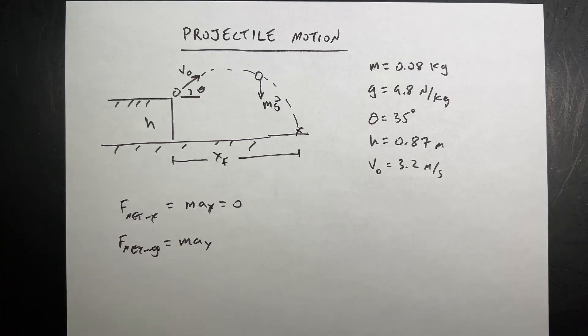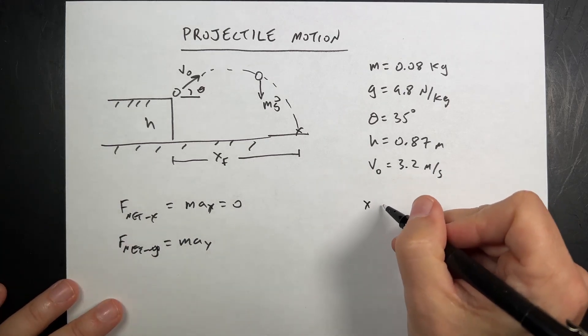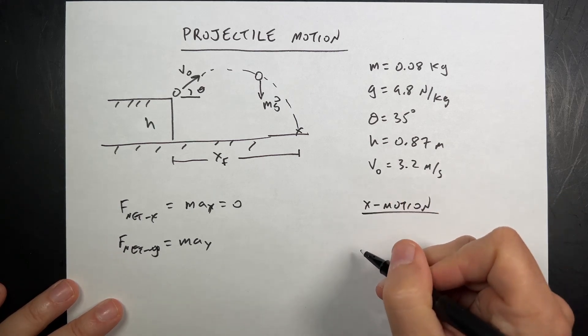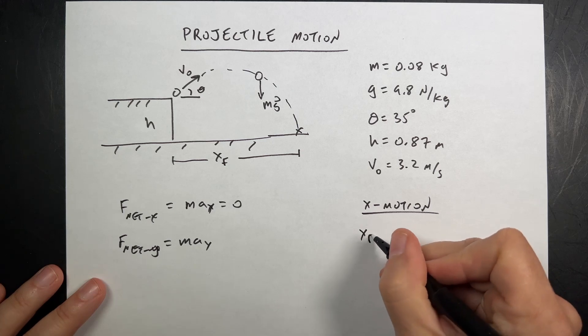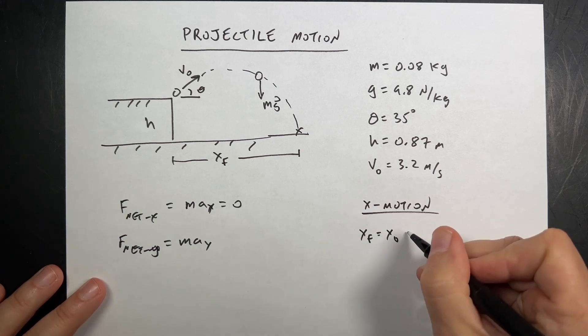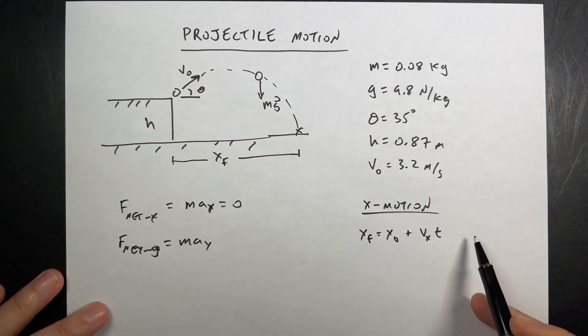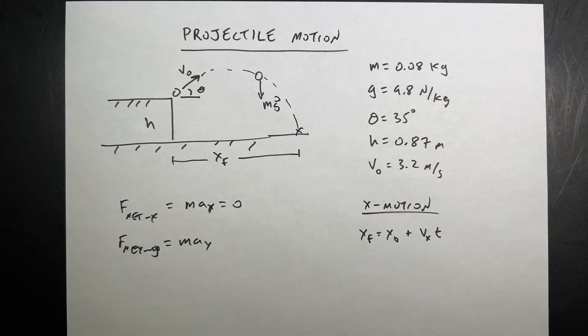So this is zero, and the mass doesn't matter. The acceleration in the x direction is zero. So right there, I can say, well, if my acceleration is zero, then I know that I have the following kinematic equation. x final equals x initial plus vx times t. There's no acceleration term there because it's not accelerating. That's an important equation.